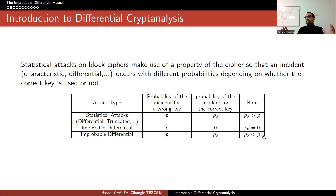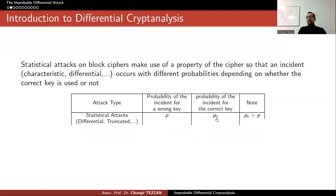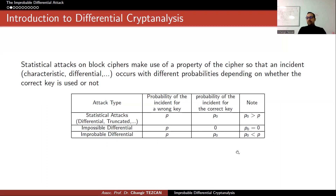The question is: can we have something where p0 is less than p but not exactly zero? Statistically, this would work because our aim is to distinguish two different binomial distributions — it doesn't matter which has the higher probability. If you can find such a distinguisher, called an improbable differential where p0 is less than p, then you can capture the correct key by keeping counters for candidate keys; the correct key will have the lowest counter, rather than the highest as in the standard case.